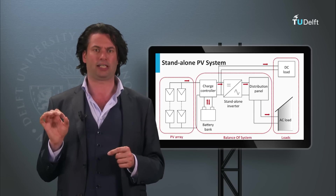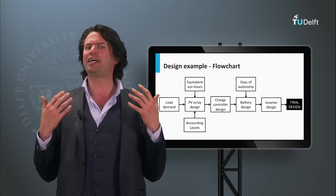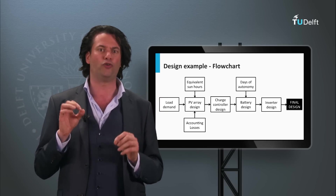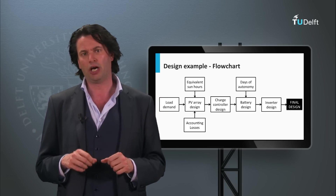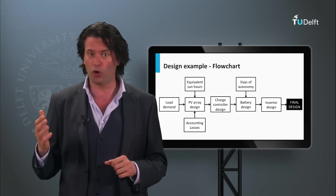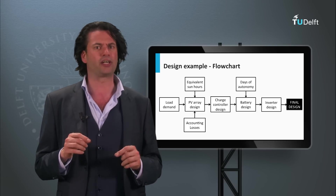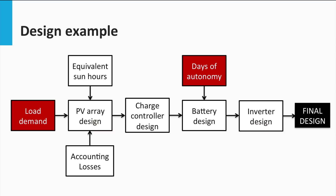Let's go to this example. I will introduce you to a simple flowchart that helps to design an off-grid PV system. We will walk through all the stages of this flowchart while considering an example. Let us first define the load demand that has to be powered with an off-grid PV system. The total days of autonomy required should also be specified.